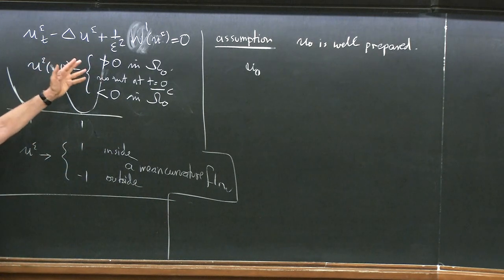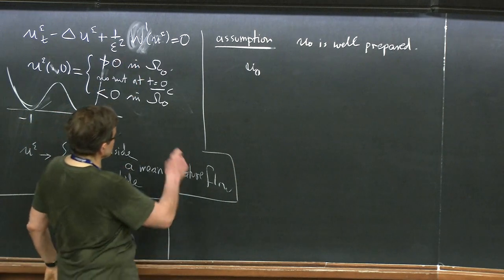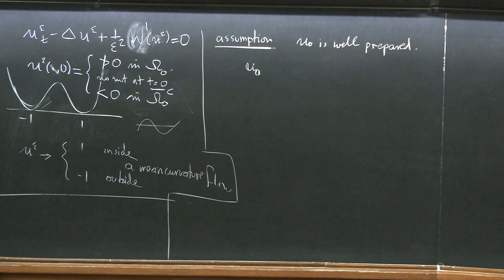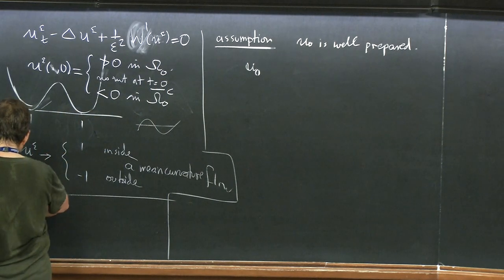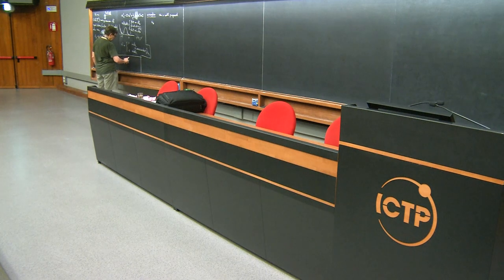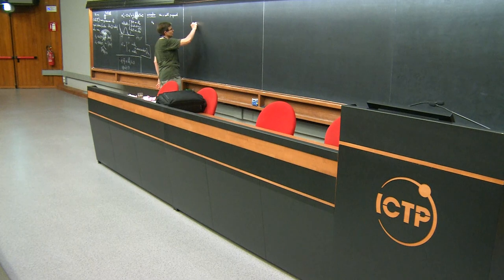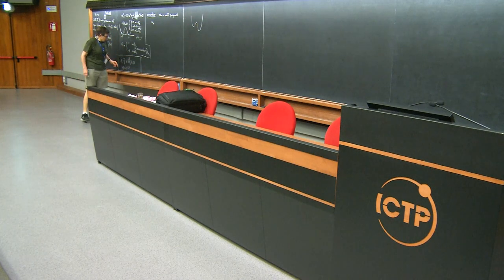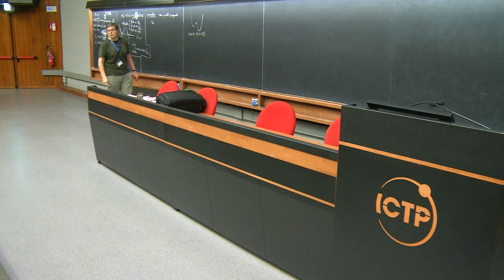What's so special about such a reaction diffusion equation? The special thing is that it admits traveling wave solutions. When you have a bistable nonlinearity — it's either this or the other — when you have an inequality like that, there is a traveling wave. There is a standing solution: a solution to this problem of the form minus C minus Q double prime plus W prime of Q equals zero, for Q going to plus or minus one.